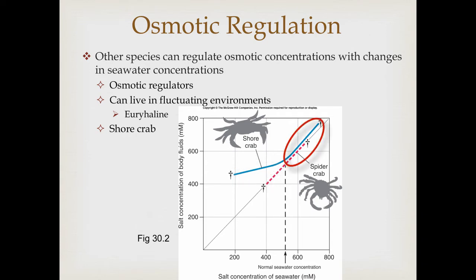At higher concentrations, shore crabs exist as conformers. But once it gets below normal seawater concentrations, they really turn on their osmotic regulatory capabilities — even as the salt water becomes less and less concentrated, they still maintain a relatively high salt concentration in their body.